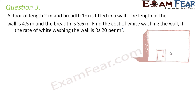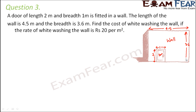Here you can see the wall and the door. The dimensions of the door are: length 2 meters and breadth 1 meter. The dimensions of the wall are: length 4.5 meters and breadth 3.6 meters. Find the cost of whitewashing the wall if the rate is rupees 20 per meter square.